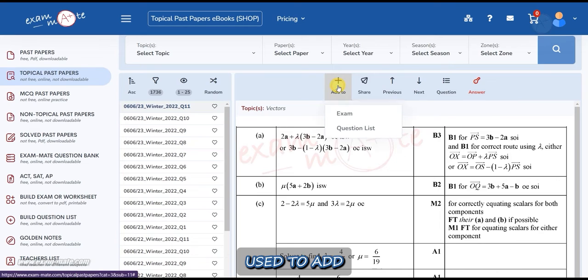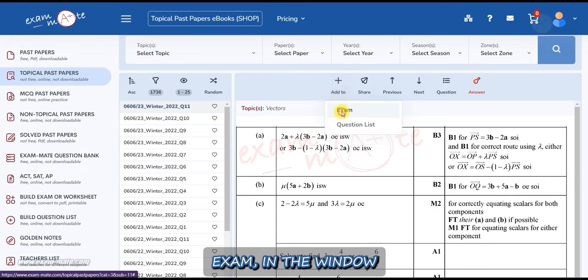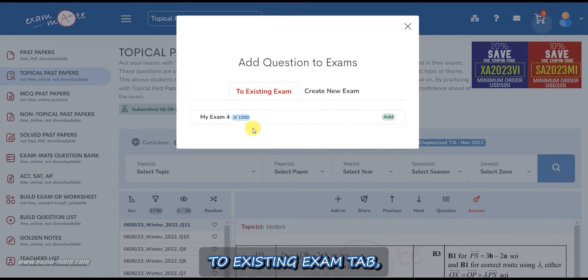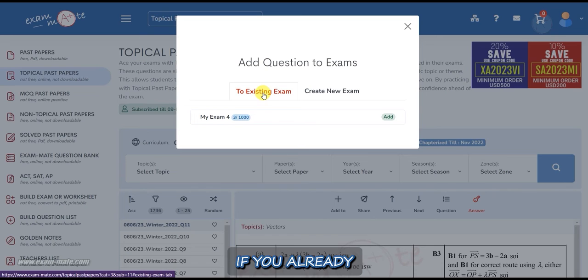The add to button is used to add your questions to the exam and questions list. If you select exam in the window that opens in the to existing exam tab, if you already have an exam, you can add the desired question in any exam you want.